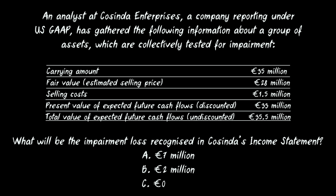We are shown the carrying amount, fair value or estimated selling price, selling costs, as well as the present value of expected future cash flows which have been discounted, and the total value of expected future cash flows which are undiscounted. What will be the impairment loss recognised in Cosinda's income statement?